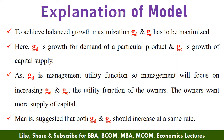it means that the steps taken by management are very fruitful and they are earning more profits for the organization. Hence, the management wants to increase demand of a particular product so that the management salaries and benefits also get increased. GC is the utility function of the owners. So here the owners want more supply of capital. According to Marris, both GD and GC should increase at the same rate. With this, both management and the owners or the shareholders will be fully satisfied. This is what Marris explained in his model.